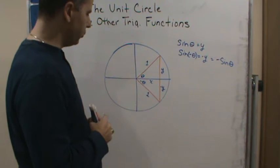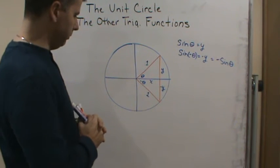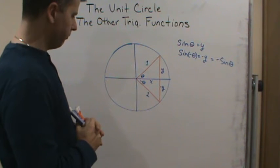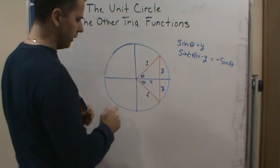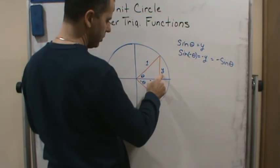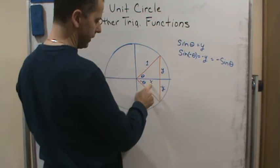Now, for example, what if I look at tangent? Well, if I look at tangent, tangent is what? Tangent of theta is y over x.